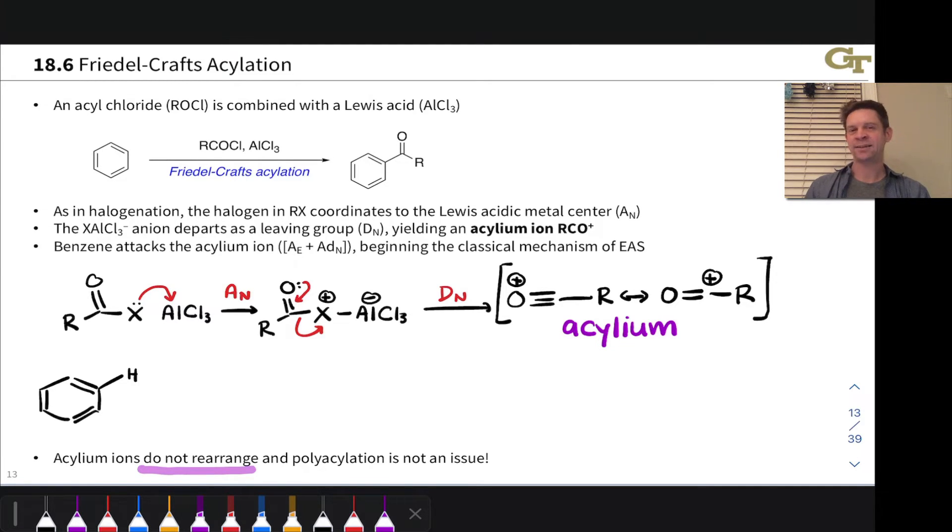The acylium ion is the active electrophile in Friedel-Crafts acylations, and it gets together with the benzene ring in a manner we're familiar with.